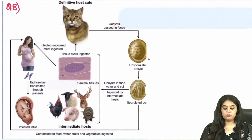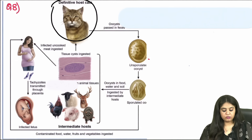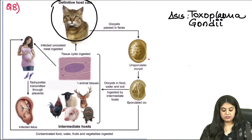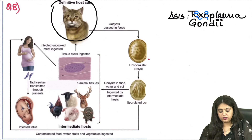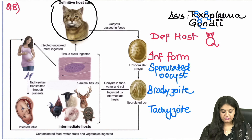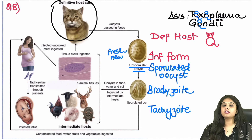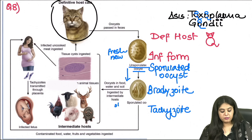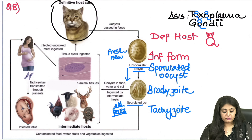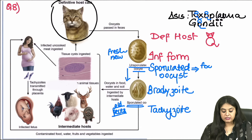The next image is a life cycle where the definitive host is a cat, making it Toxoplasma gondii — a coccidian parasite. The cat passes oocysts, but fresh feces contain unsporulated oocysts that are not infective. As time passes and the feces become old, sporulation occurs. It is the sporulated oocyst that gets contaminated into food and water and thereby enters human beings as the infective stage.